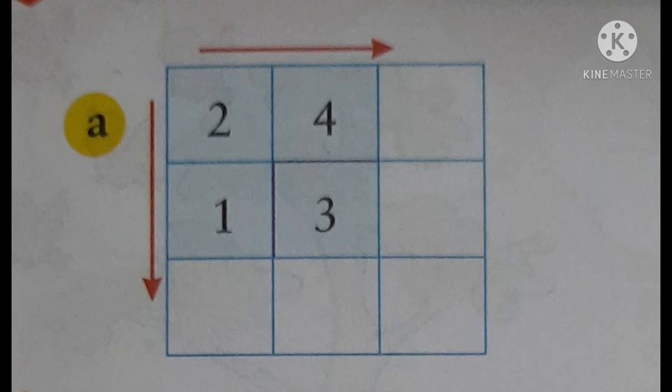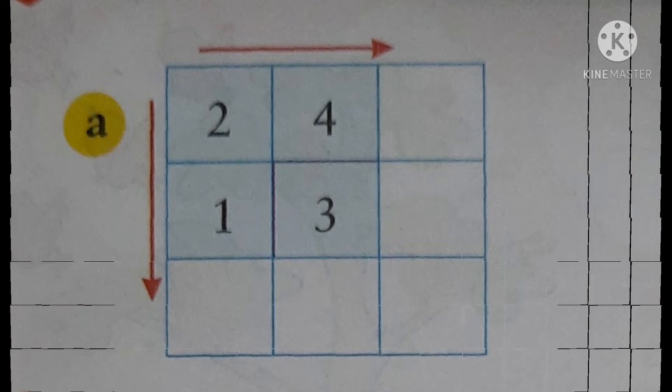Same way downward 2 plus 1, 4 plus 3. So, you will write the answer and you will see both side the answer is same. Isn't it interesting? Now, let us go to the next one.